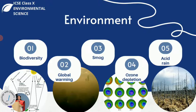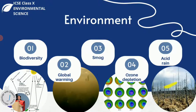Ozone depletion mainly happens due to chlorofluorocarbons (CFCs) or their derivatives, which deplete the ozone layer in the stratosphere. The stratosphere contains ozone that protects us from ultraviolet radiation. These components break down the ozone, leaving nothing to protect us from the harmful UV rays of the sun. Acid rain is another problem that occurs when sulfur oxides and nitrogen oxides react with water and come down as highly acidic rain.